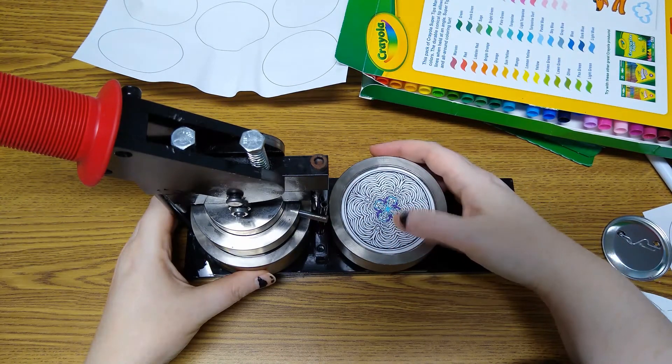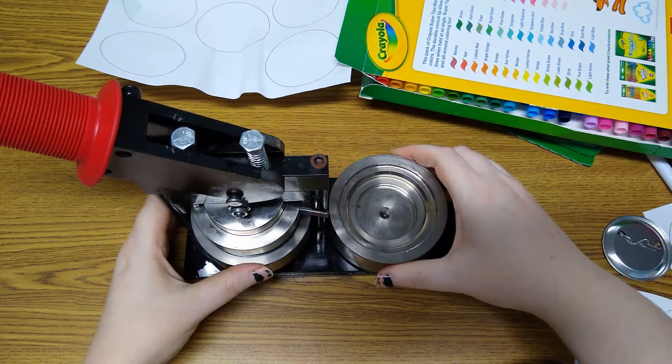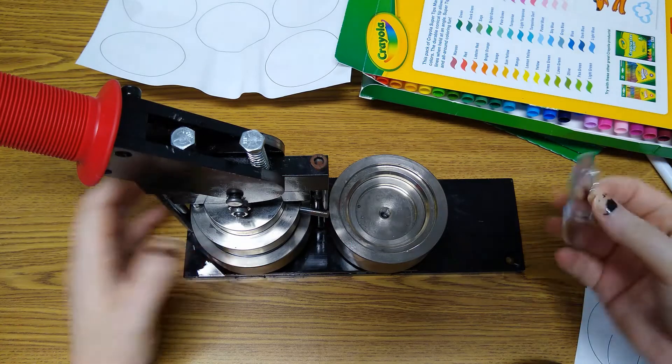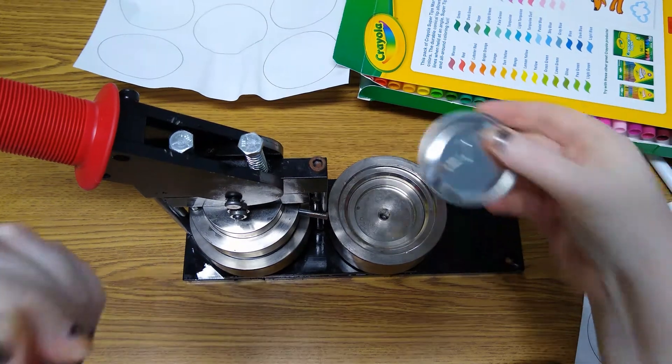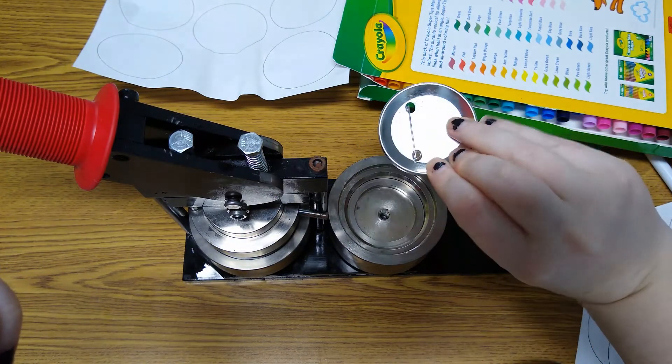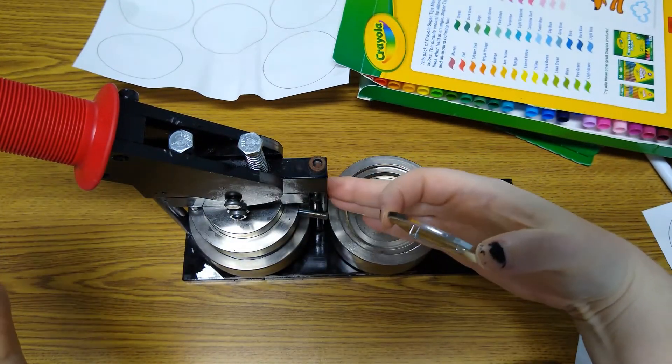Now at this point you can stamp this side. I'm going to go ahead and turn the machine so that's ready for stamping. And then you're going to put the back of the button in this side, again with the top facing the center pole.